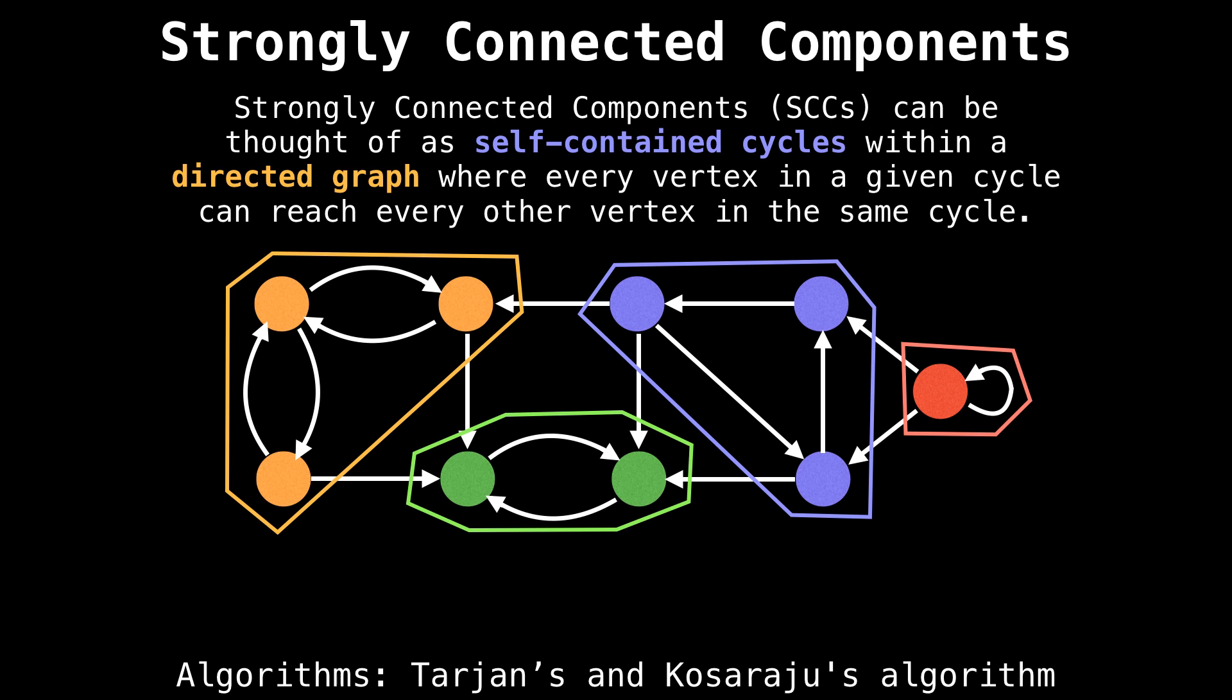This is very useful in many algorithms and is usually an intermediate step. So it's important to know how to find these strongly connected components, and there are many very elegant algorithms to do so, such as Tarjan's algorithm.